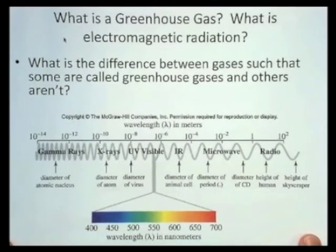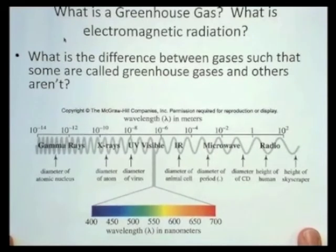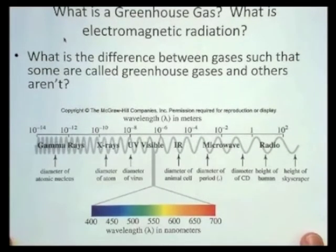A greenhouse gas is a type of gas that can absorb infrared radiation, and infrared radiation is a type of electromagnetic radiation that falls in a particular region of the electromagnetic spectrum.